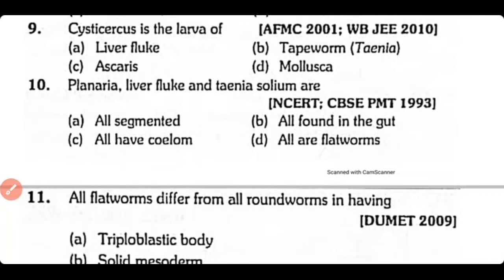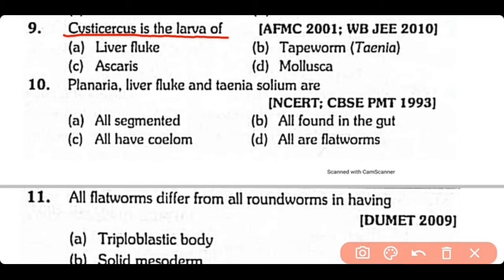Question no.9. Cysticercus is the larva of: liver fluke, tapeworm, Ascaris, or Mollusca? The correct answer is option B. Cysticercus is the larva of tapeworm.